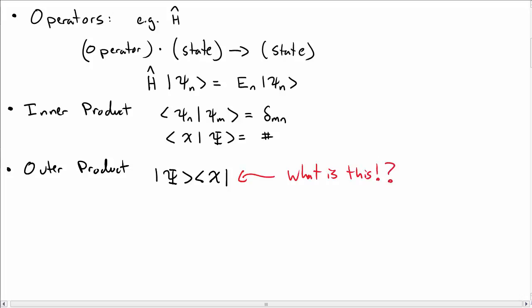So in order to investigate what this object is, let's have this act on another state, say beta, and see what happens. So let's take this outer product of psi and chi, and act it on beta.